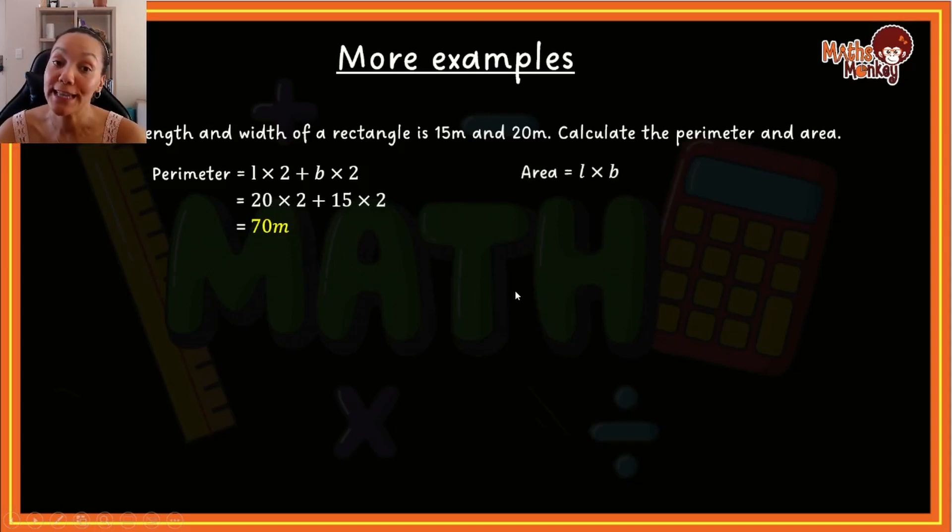If I now want to calculate the area of this rectangle, in other words, what is the entire space that this rectangle takes up, I'm going to say length times breadth, which is then 20 × 15, and I end up with 300 meters squared. This meters is squared because I'm calculating area. So this is just an example where the diagram or the image is not given.